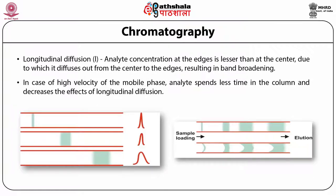Another factor is longitudinal diffusion. The analyte concentration at the edges is lesser than at the center, causing it to diffuse out from the center to the edges, resulting in band broadening — this phenomenon is termed longitudinal diffusion. In case of high velocity of mobile phase, analytes spend less time in the column, which decreases the effect of longitudinal diffusion.